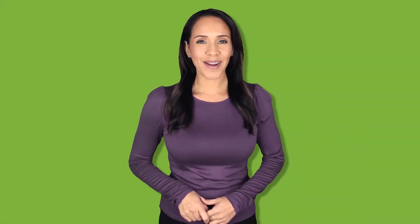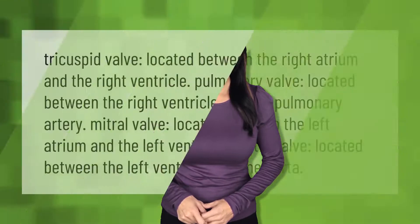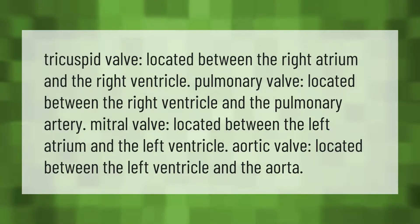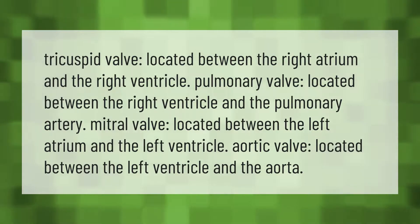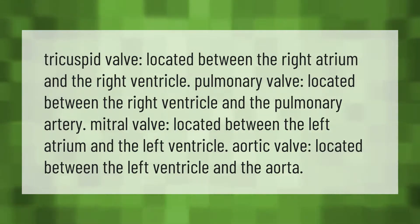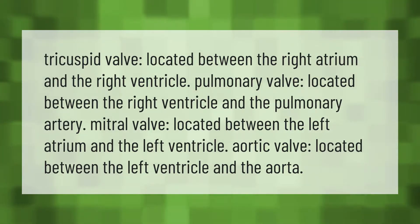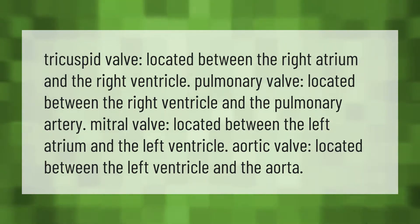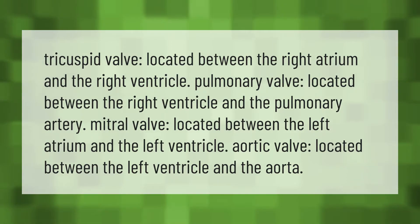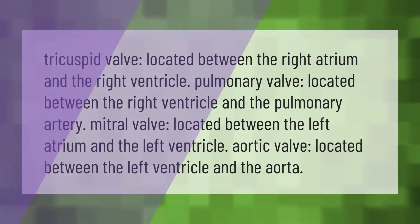Tricuspid valve: located between the right atrium and the right ventricle. Pulmonary valve: located between the right ventricle and the pulmonary artery. Mitral valve: located between the left atrium and the left ventricle. Aortic valve: located between the left ventricle and the aorta.